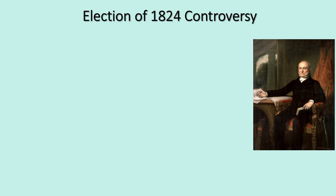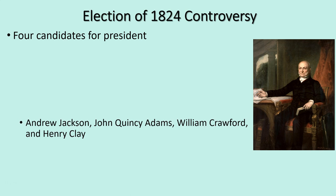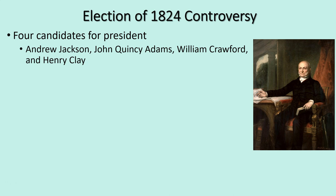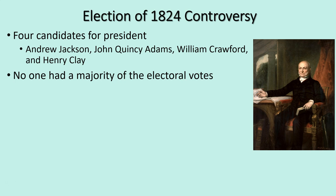We want to start with the election before Jackson gets elected but where he runs for president. In the election of 1824 there's a lot of controversy. There are four candidates: Andrew Jackson, John Quincy Adams — who is the son of John Adams, the second president of the United States — William Crawford, and Henry Clay. Because there are four candidates, nobody has a clear majority of the electoral votes, although Andrew Jackson does get the largest share of the popular vote.